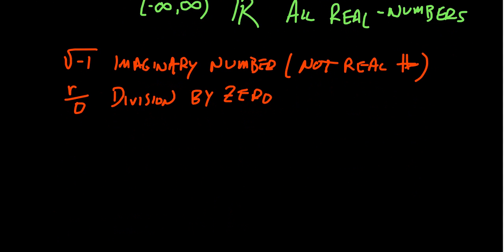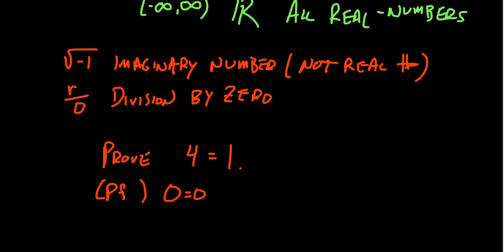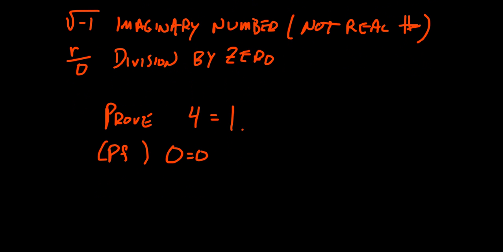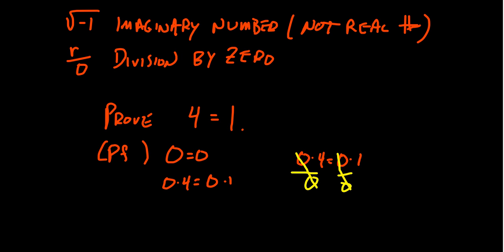Suppose we did allow division by zero. Let's prove that four equals one. Start with something we know is true: zero equals zero. Zero is the same as zero times four, because anything times zero is zero. And zero is also zero times one. So we have zero times four equals zero times one. If we were allowed to divide both sides by zero, we would get four equals one.